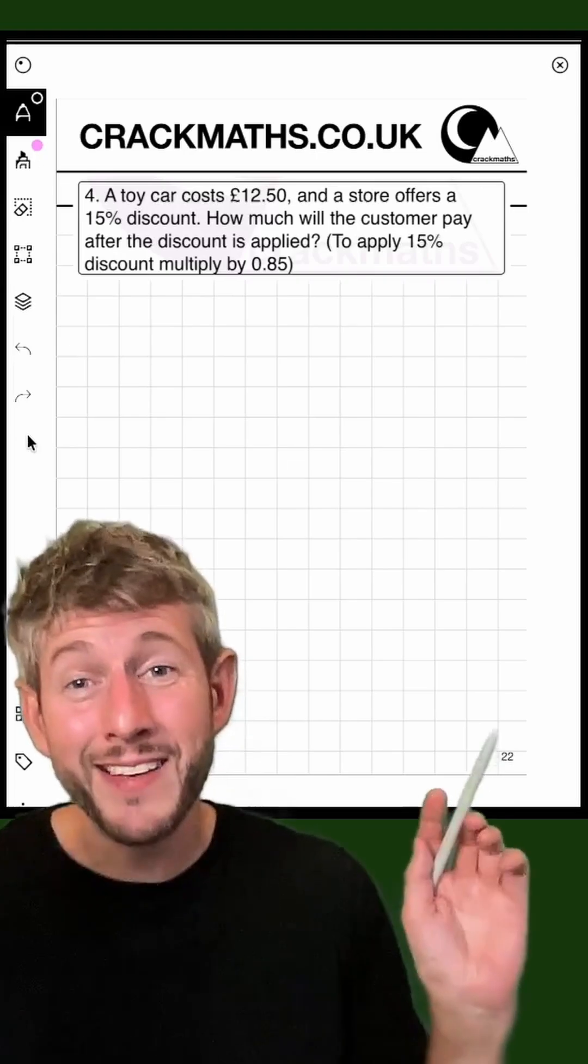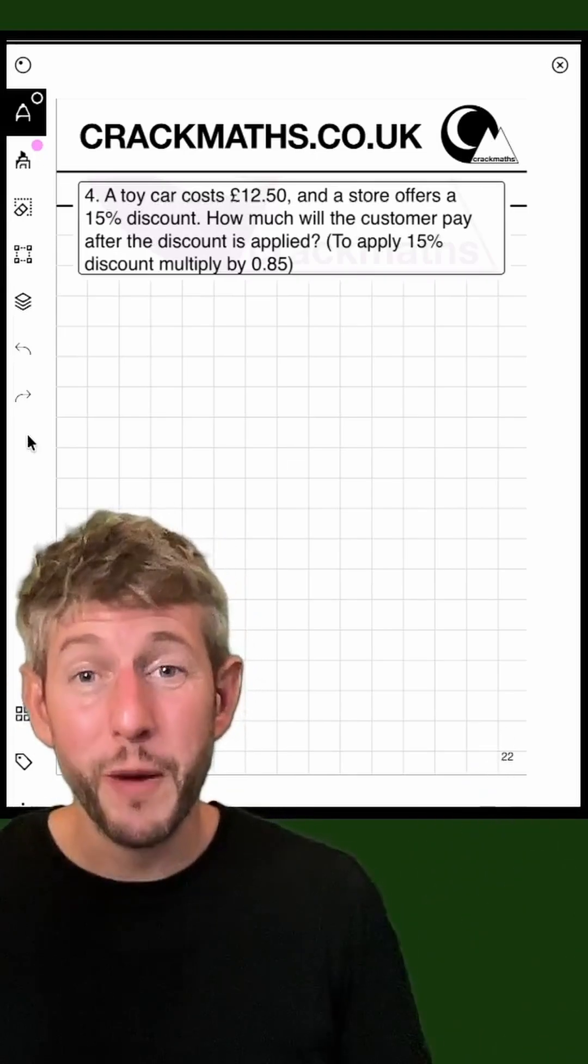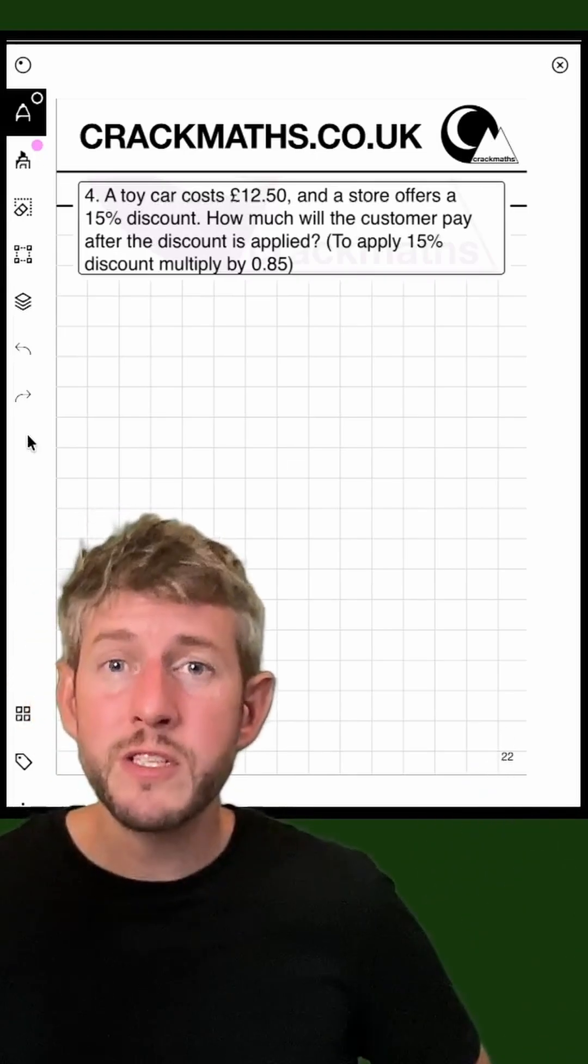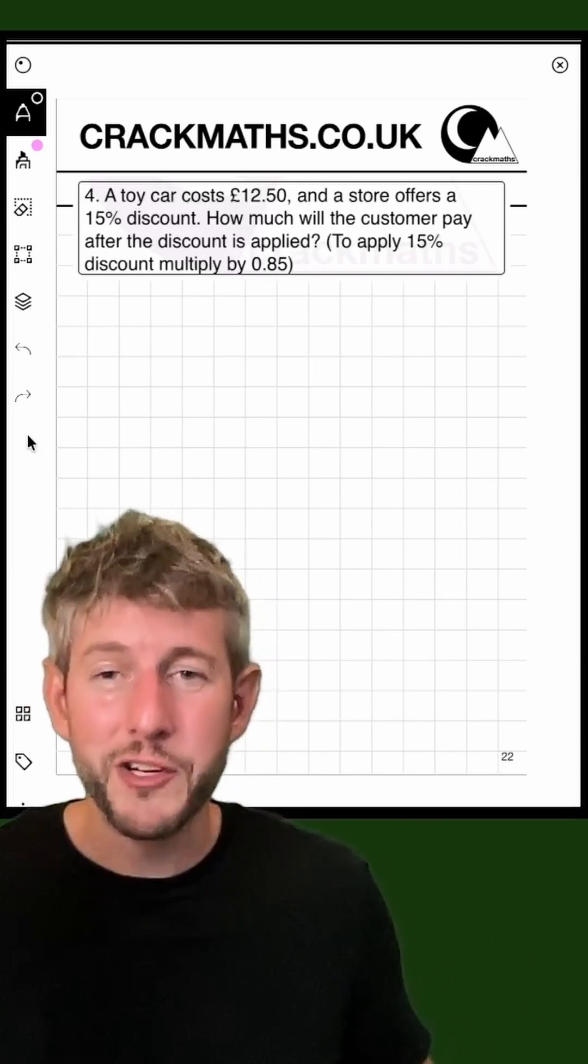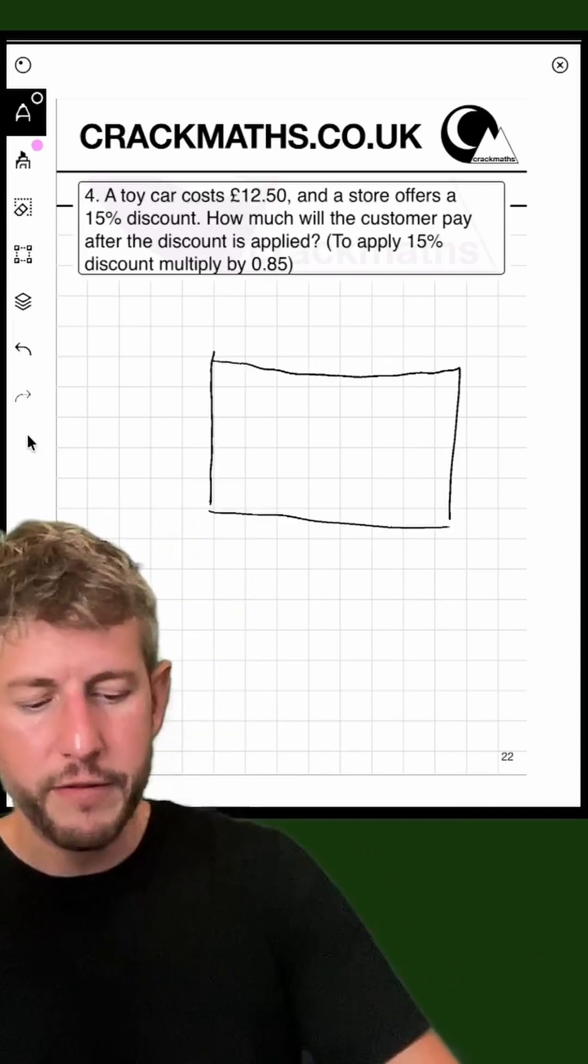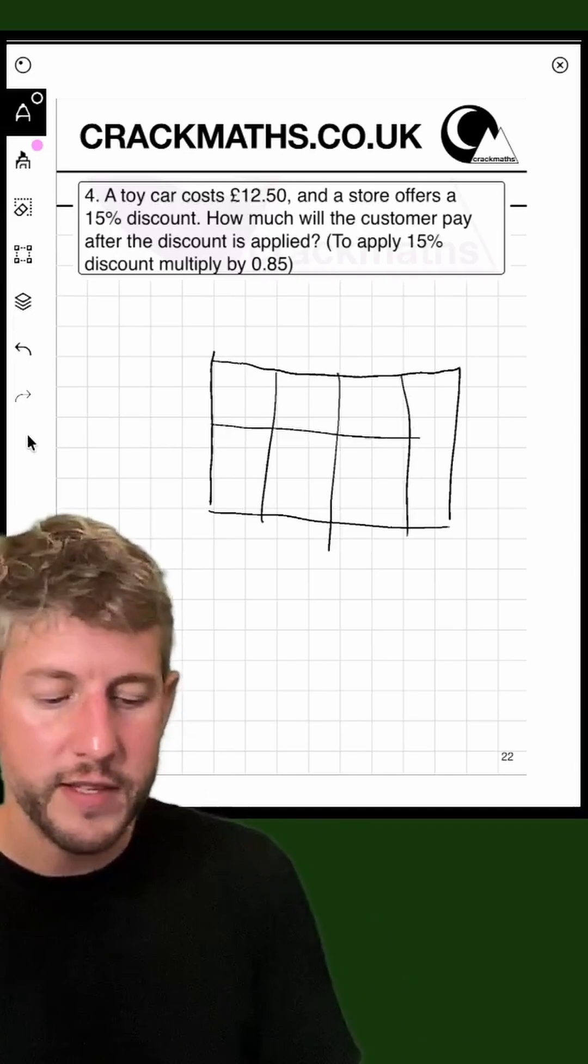This question comes from a section on long multiplication with numbers involving decimals. In order to do this, I'm going to do a long multiplication grid using the lattice method. I'm going to divide this side into fours and this side into threes.